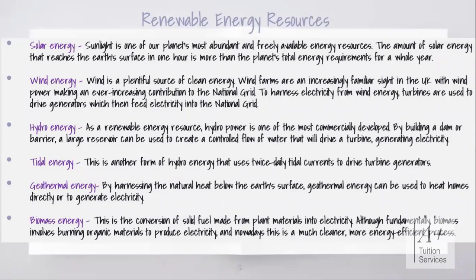The first type of renewable energy resource is solar energy. Sunlight is one of our planet's most abundant and freely available energy resources. The amount of solar energy that reaches the earth's surface in one hour is more than the planet's total energy requirements for a whole year. If we create devices that capture sunlight and produce electricity, such as solar panels, we can use that to power our households at a cheaper rate than what we pay our electrical company.